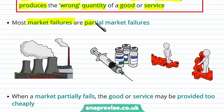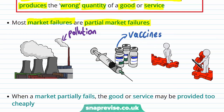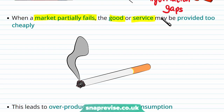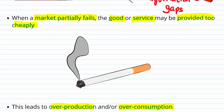Most market failures are partial market failures. Examples we will build on in future videos include pollution, the under-provision of vaccines, and information gaps within the market. When a market partially fails, the good or service may be provided too cheaply — such as cigarettes, which were very cheap to produce a couple of decades ago, leading to quite high overproduction and overconsumption. In later videos, we'll learn about how governments and policymakers try to address overproduction and overconsumption of goods not leading to an efficient allocation.